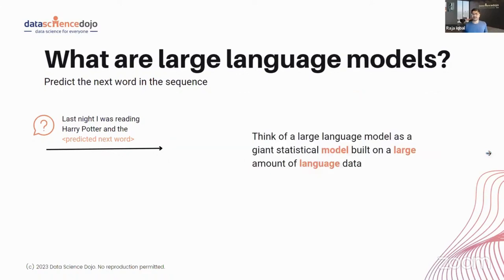So what is a large language model? As fancy as it sounds, we talk about deep neural networks, these huge neural networks and lots of compute, Nvidia releasing GPUs after GPUs, OpenAI and Anthropic all talking about it. Under the hood, think of a large language model as a giant statistical model built on a large amount of language data.